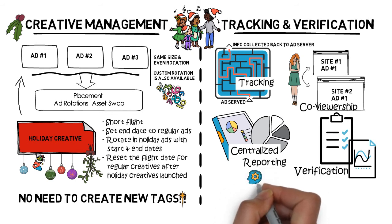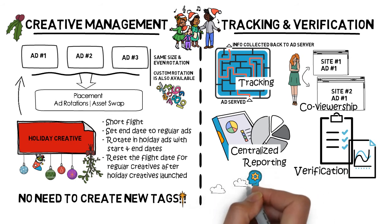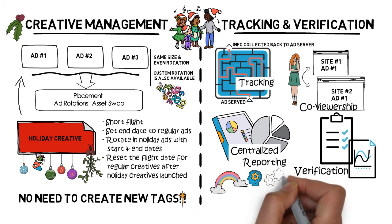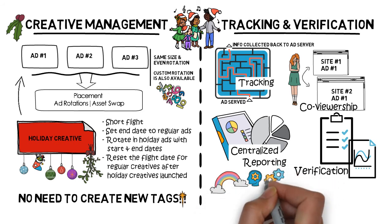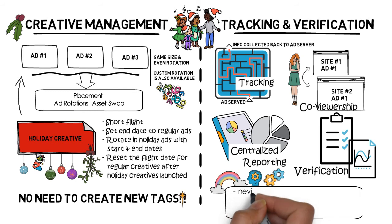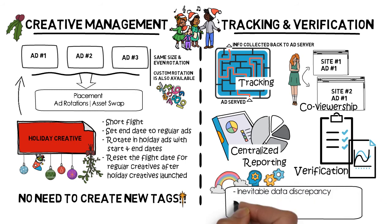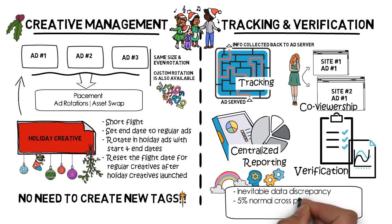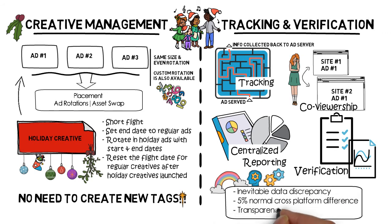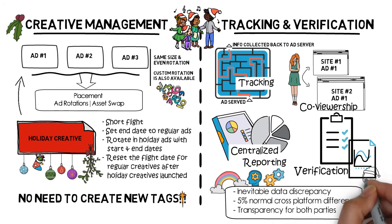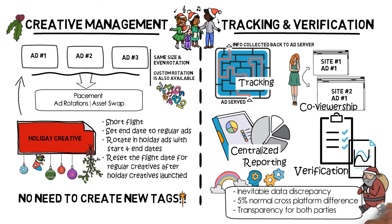Ad servers would also provide an internal ad viewability tracking tool, or they could integrate with third-party tracking tools if needed. One thing to keep in mind is that data discrepancy across platforms is inevitable. Usually a 5% discrepancy is considered normal. This offers a level of transparency between advertisers and publishers.